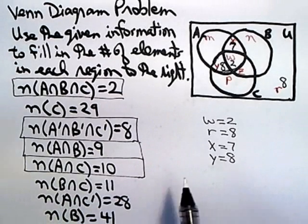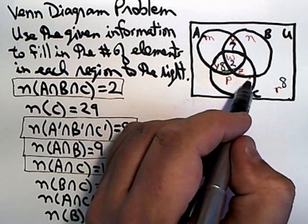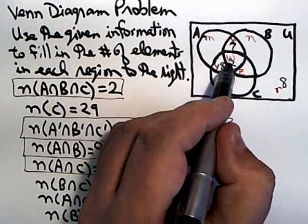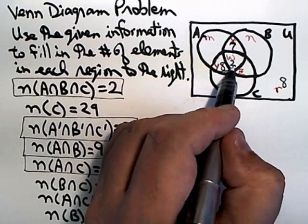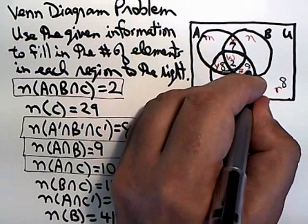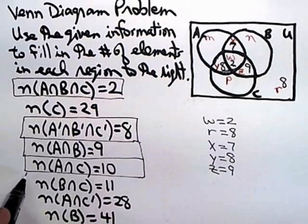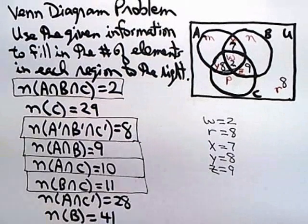Continuing, the overlap between B and C. There's B and there's C, so the overlap between B and C would be this football-shaped region here, which consists of W and Z. But I already know that W is 2, and the overlap is supposed to be 11, so that means Z would be 9. So now I know that Z is 9, and I've used this piece of information.